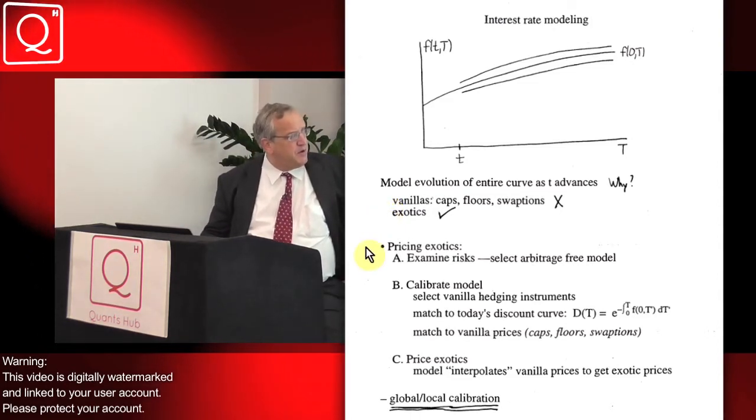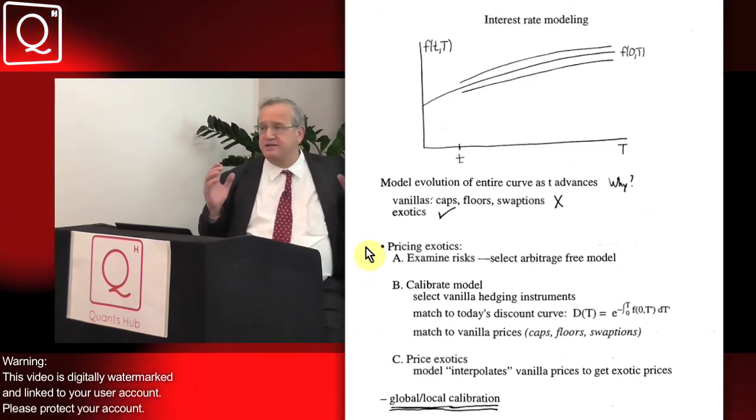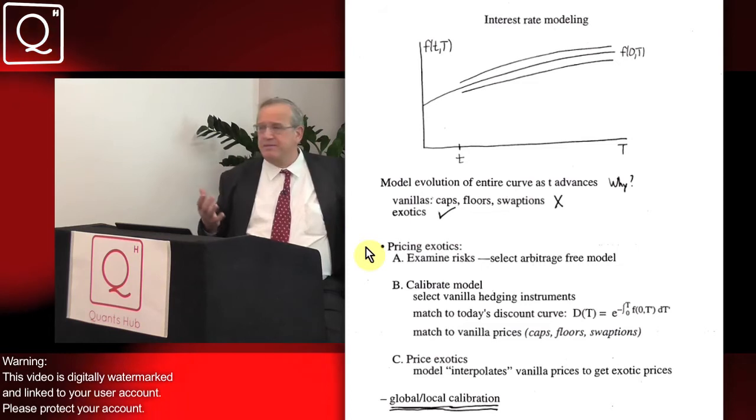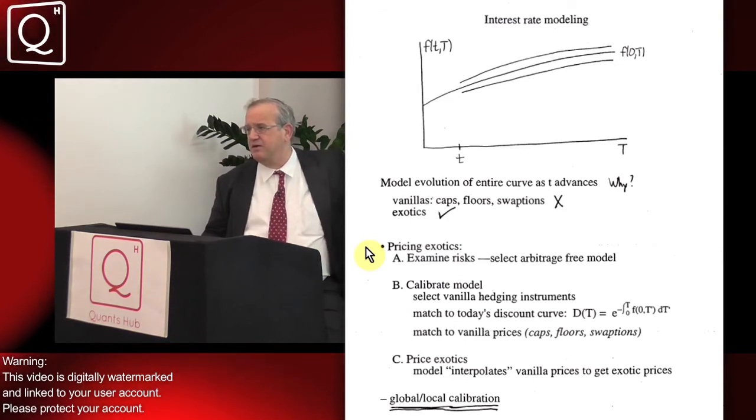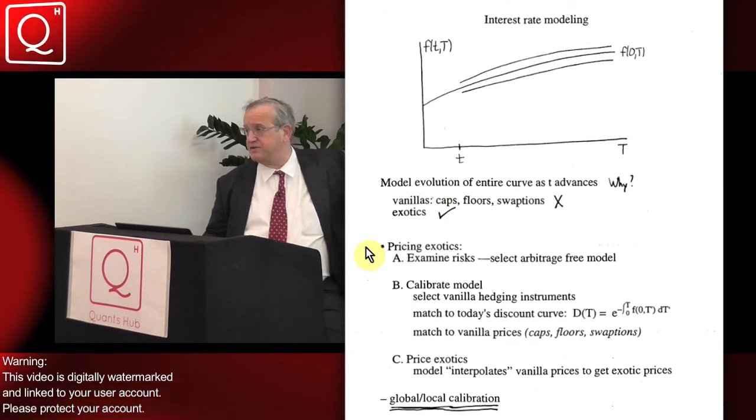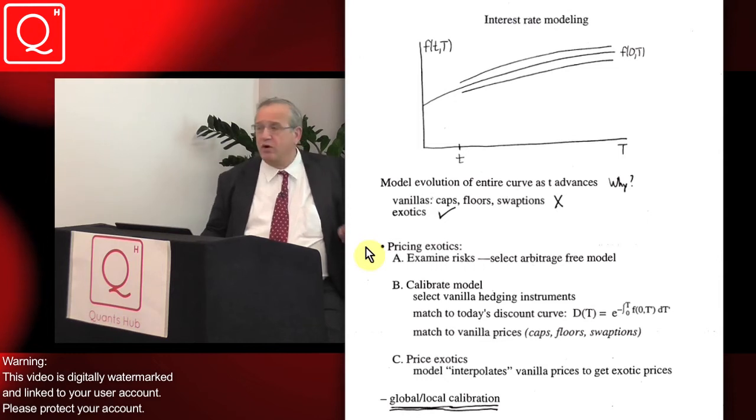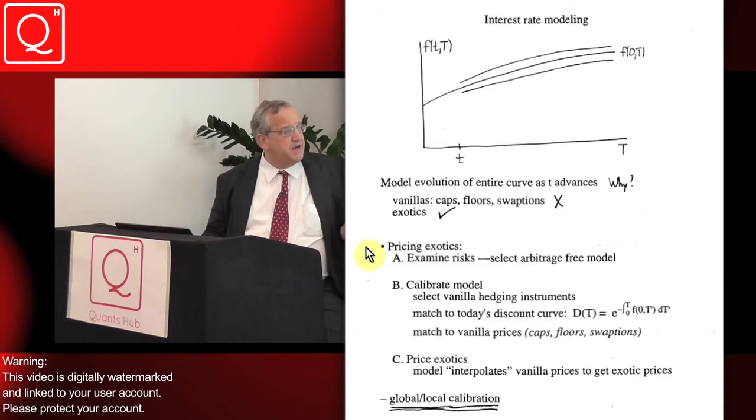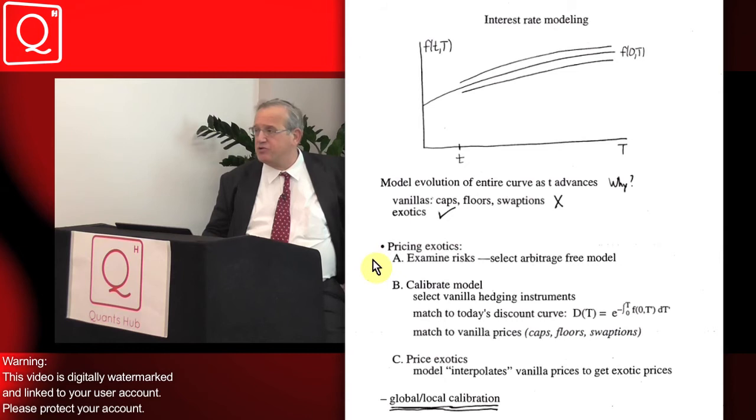Now, in theory, when you want to price an exotic, this is the procedure. First, you take a book of exotics, then you examine qualitatively what are the risks that this book has. Is it mostly at risk for interest rates going up and down - outright rate risk? Or is it at risk for tilts in the curve, like spread risks? Or is it at risk for volatilities going up and down? Once you decide what the sort of risks are qualitatively, the next step is to select an arbitrage-free model that's capable of describing those risks.